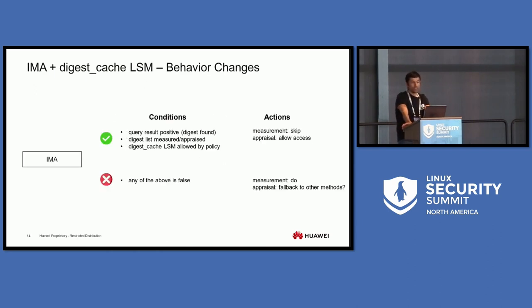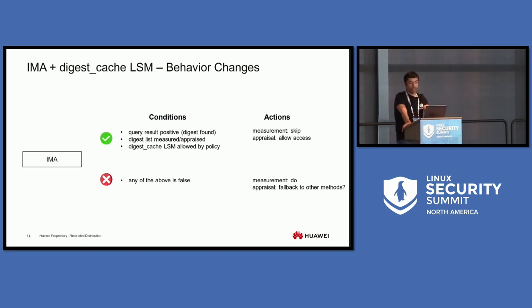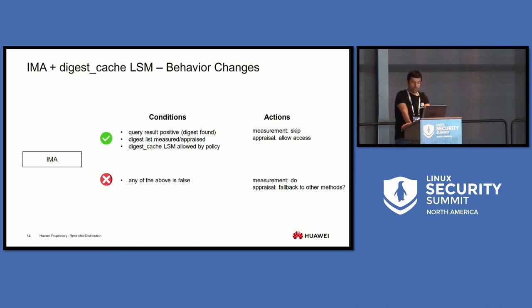The conditions for using the Digest Cache LSM are: the query result is positive (the digest is found), the package digest list is measured, and usage of the Digest Cache LSM is allowed by an IMA policy. If all three conditions are met, the action is to skip the measurement — solving the slow TPM problem by cutting measurements — and appraisal is marked as successful. If any condition is false, we still do the measurement and fall back to other appraisal methods like verifying the extended attribute file signature.